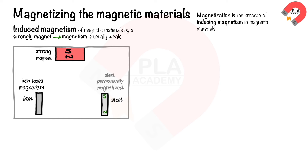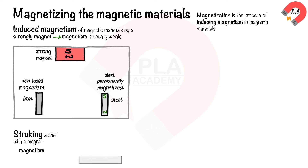When the iron and steel are moved away from the north pole of the strong magnet, the iron loses its magnetism, while the steel remains permanently magnetized.